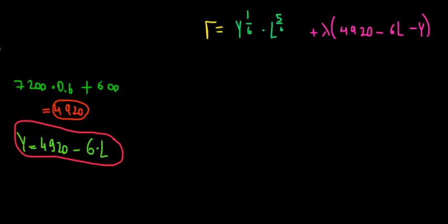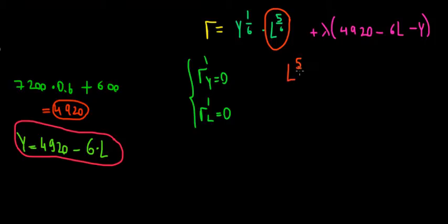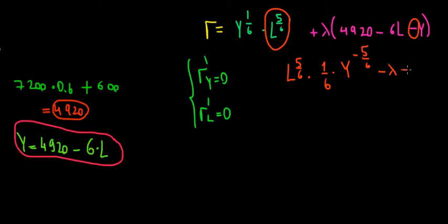We take the partial derivatives where the Lagrangian derivative with respect to y equals zero. When we differentiate with respect to y, we keep the constant l to the power of 5/6, and the derivative of y to the power of 1/6 gives us 1/6 times y to the power of minus 5/6. From the constraint term, differentiating with respect to y leaves minus lambda. So our first condition is: (1/6) · y^(−5/6) · l^(5/6) − λ = 0.